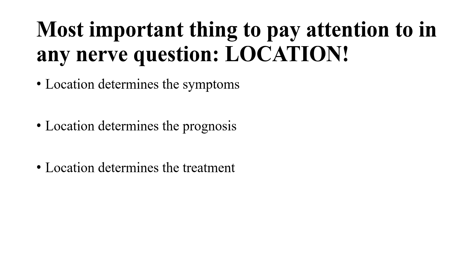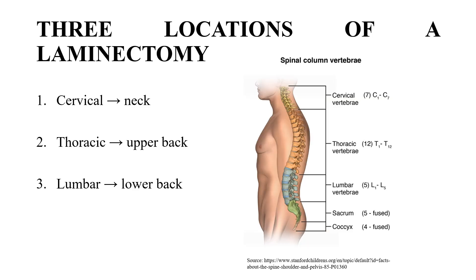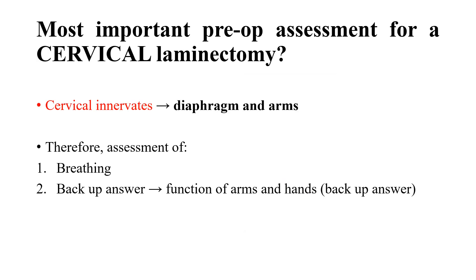There are three locations for laminectomy: cervical, thoracic, and lumbar. Cervical refers to the neck region; thoracic refers to the upper back; and lumbar refers to the lower back. The location of the laminectomy determines the symptoms, prognosis, and treatment approach. Location is the most important factor in preoperative assessment.